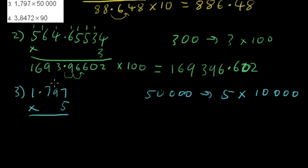5 times 7 is 35, 5 times 9 is 45 plus that 3 gives me 48, 5 times 7 is 35 again, plus 4 is 39. 5 times 1 is 5 plus 3 is 8. So I've done the times 5, I now need to multiply it by 10,000, so multiply it by 10,000.